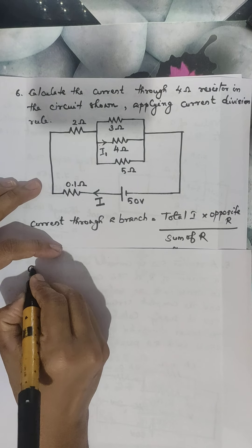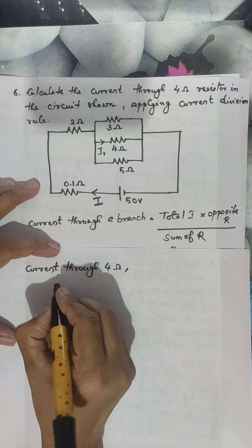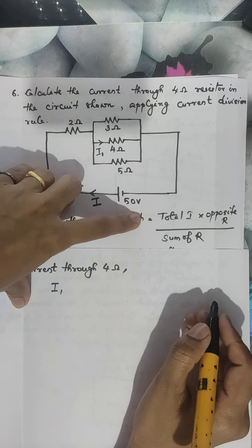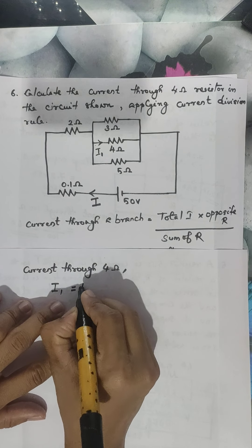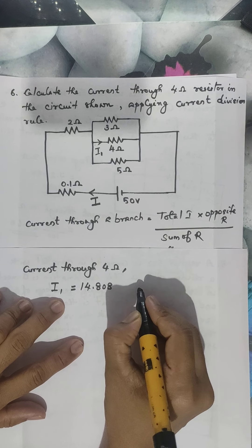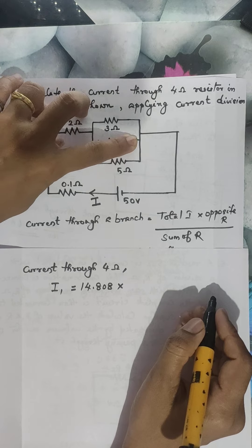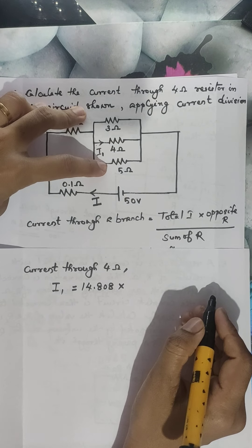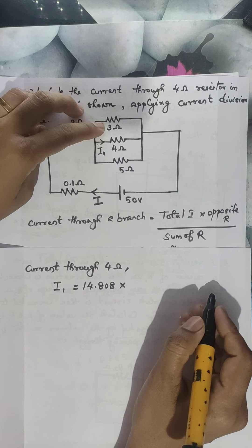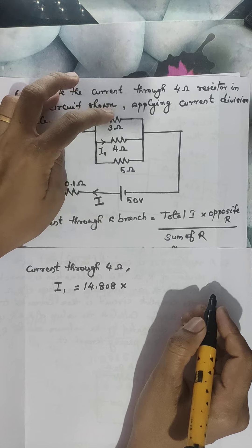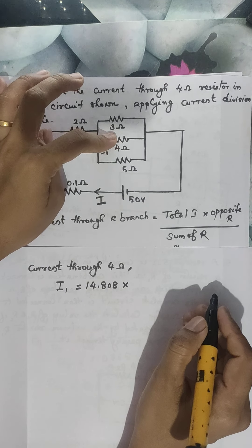We have been asked to calculate the current through the 4 ohm resistor in the parallel combination, marked as I1. According to the current division rule, current through a particular branch equals total current (14.808 A) multiplied by the opposite branch resistance. The resistance we are considering is this 4 ohm resistor, and the opposite branch consists of the 5 ohm and 3 ohm resistors, which are in parallel.